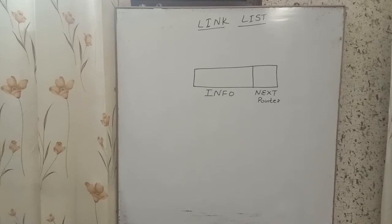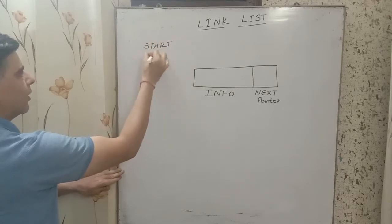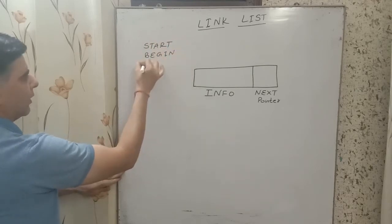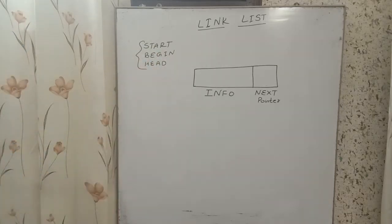The last node in a single linked list will have a null pointer in its next part. The address of the first node is stored in a special variable named start, begin, or head. Since pointers are used to maintain the link between different nodes, that is why it is named a linked list.